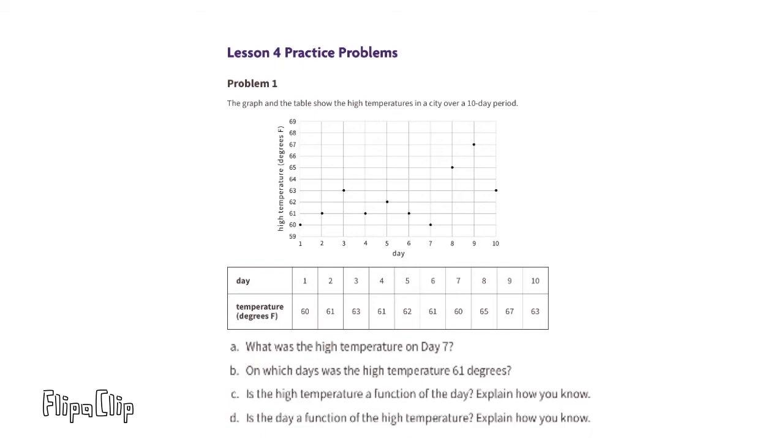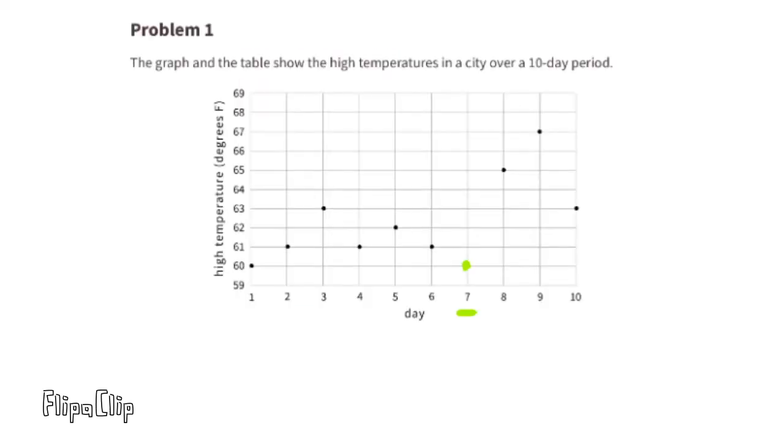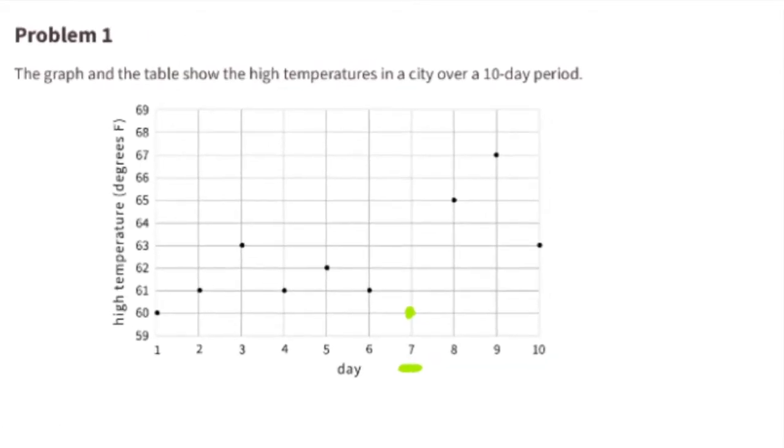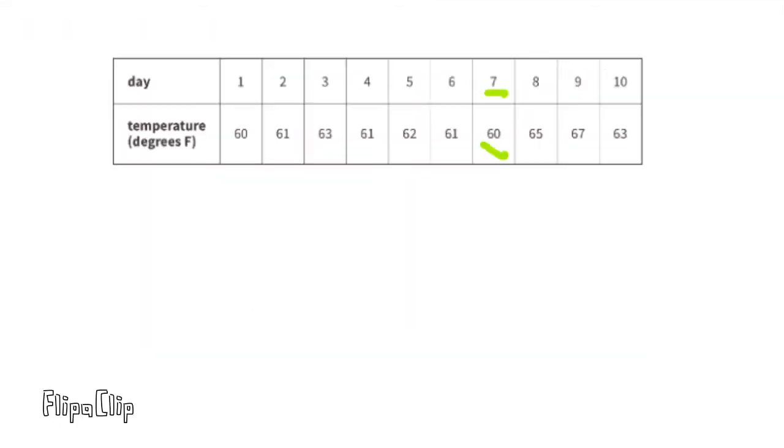Problem number 1. The graph and the table show the high temperatures in a city over a 10-day period. A. What was the high temperature on day 7? The point on the graph at day 7 indicates that the high temperature was 60 degrees Fahrenheit. You can also find that temperature in the table. On day 7 of the table, the temperature is 60 degrees Fahrenheit.